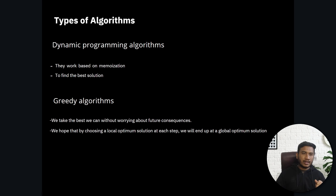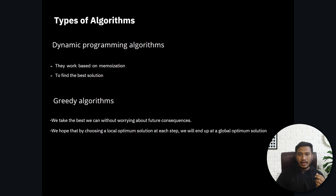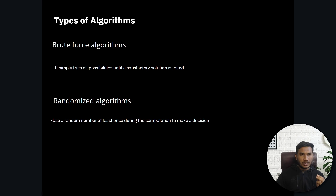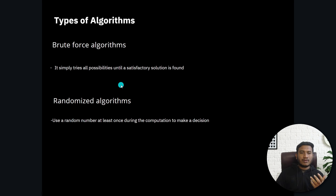Dynamic programming algorithms work based on memoization to find the best solution. Greedy algorithm takes the best choice without worrying about future consequences, hoping that by choosing a local optimum solution at each step we'll end up with a global optimum solution. Brute force algorithm simply tries all possible solutions until a satisfactory solution is found. Randomized algorithm uses a random number at least once during computation to make a decision.